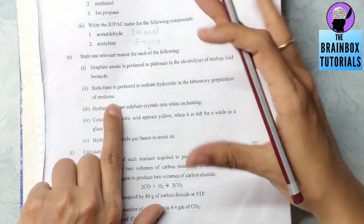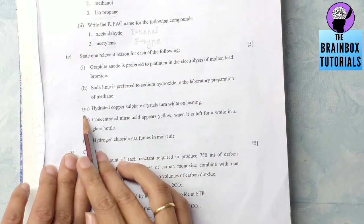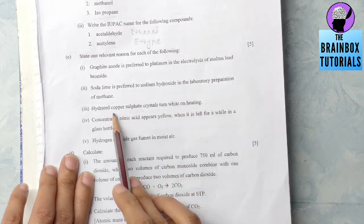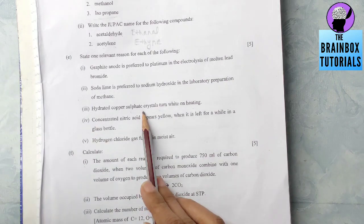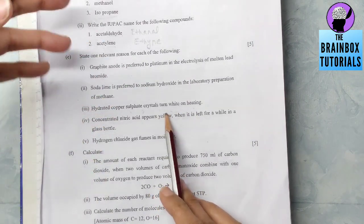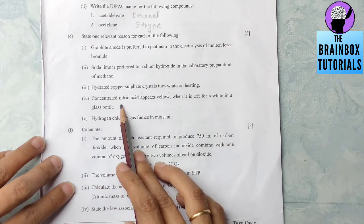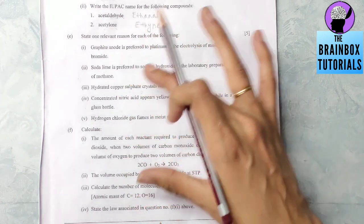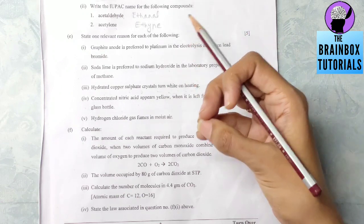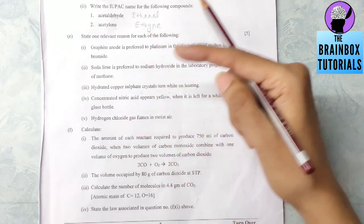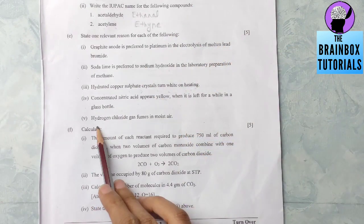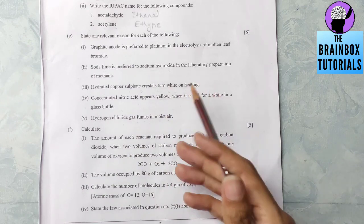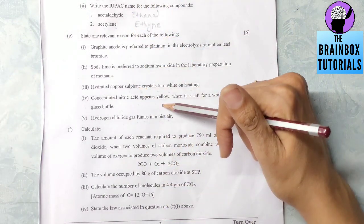Number three: hydrated copper sulfate crystals turn white on heating. Hydrated copper sulfate crystals are blue in color, but when water is lost then it becomes white, so you will say when it is heated they lose water of crystallization, so they turn white. Number four: concentrated nitric acid appears yellow when it is left for a while in glass bottle. Due to thermal decomposition of a part of HNO3 when it is kept in air, reddish brown color NO2 gas is dissolved in the acid, so it gives a yellow tinge. Number five: hydrogen chloride gas fumes in moist air. Hydrogen chloride gas fumes in moist air because it makes hydrochloric acid when it reacts with moisture of the air.